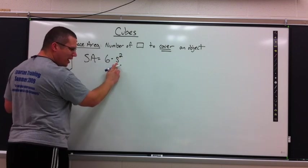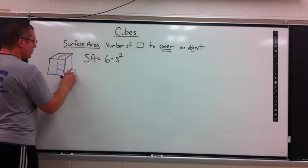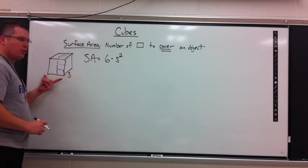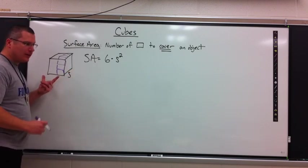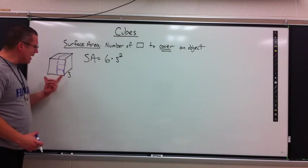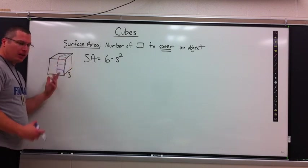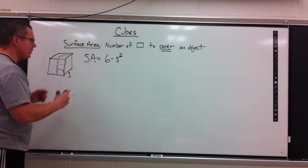This is an S, not a 5. S stands for the side length. Why is there not a length and width in a cube? That's right, because cubes are the same length on every edge. That's what makes it a cube and not a rectangular prism.